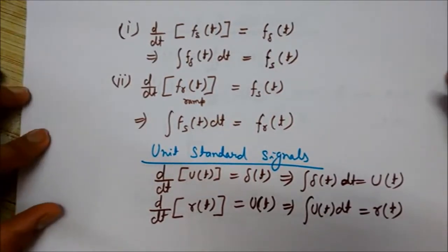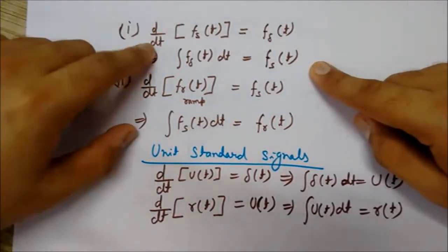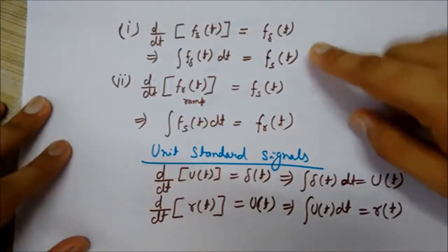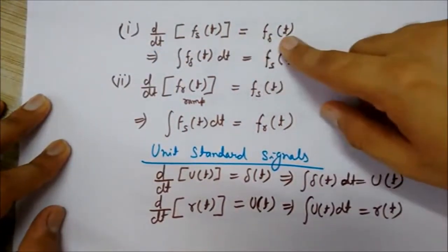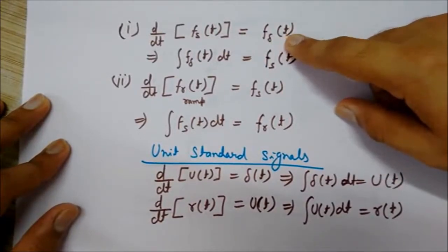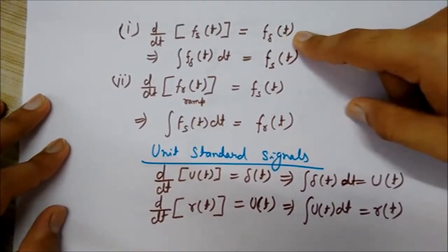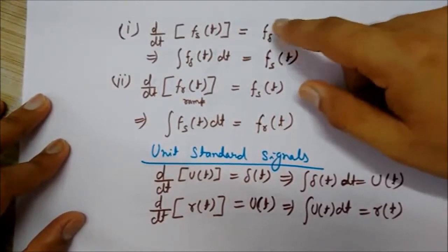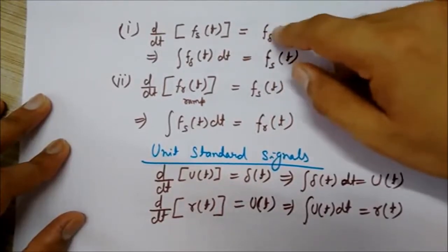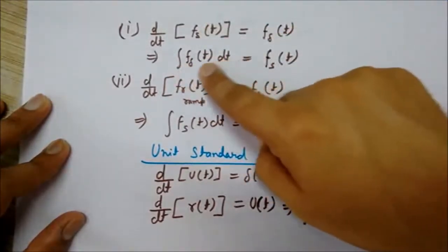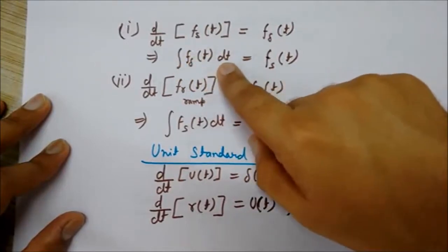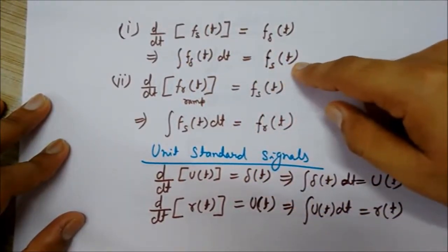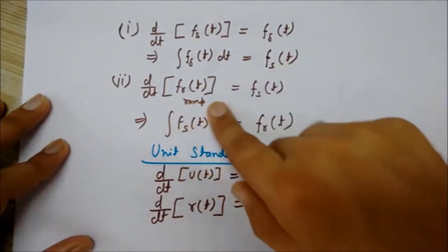The differentiation of step signal with respect to time can give us the impulse signal. And if we see the reverse action, then we can say that if I integrate this, then I will get this. So integration of this impulse signal with respect to time will give me the step signal back.